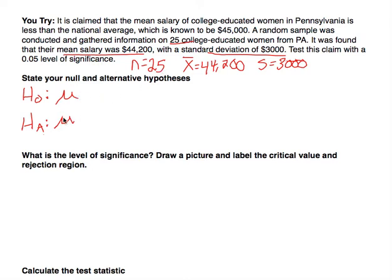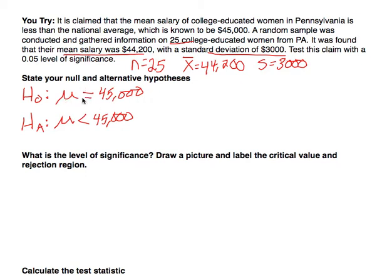If mu is less than, that goes in the alternative hypothesis, because we reserve greater than, less than, or not equal to for the alternative hypothesis. The null hypothesis assumes the claim is true: μ = 45,000. Some books write this as greater than or equal to, but we'll just assume the mean is 45,000 and test that against the alternative that it's actually less.